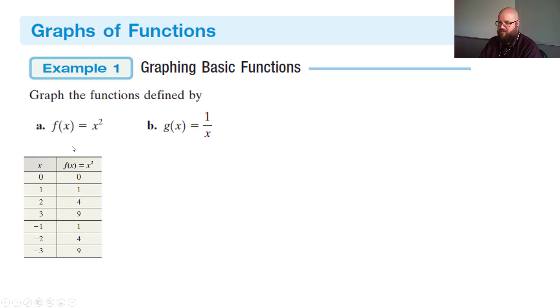And when you plug those values into this equation, f(x) = x squared, you get these values. So 0 squared is 0. 1 squared is 1. 2 squared is 4. 3 squared is 9, and so forth.